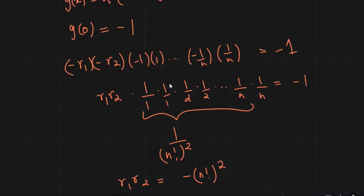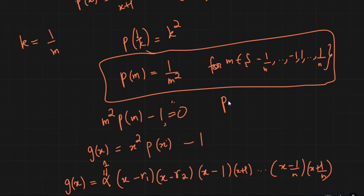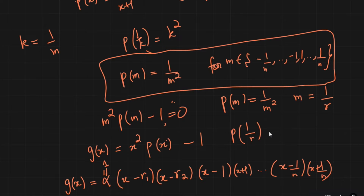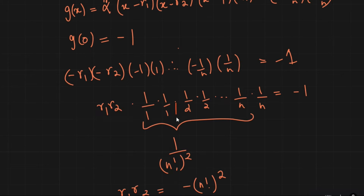Why do we care about the roots? Because the condition p(m) = 1/m² is equivalent to m being a root of g. And if p(m) = 1/m², then setting m = 1/r gives p(1/r) = r². So our original problem is equivalent to finding the reciprocals of the roots of g. So finding the roots of g is exactly what we need.